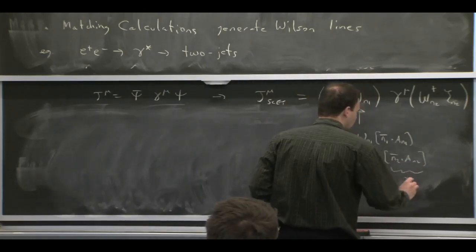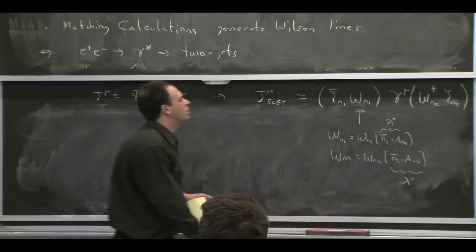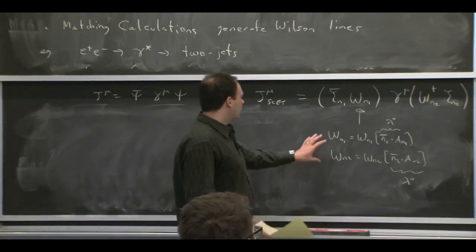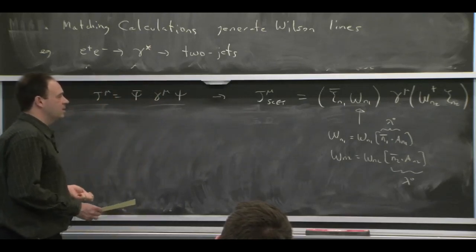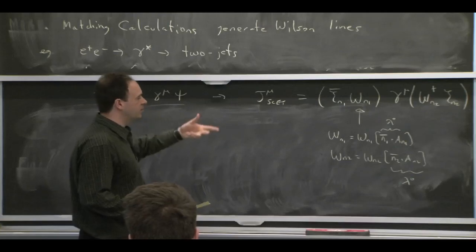So you get Wilson lines that are built out of the n1 bar dot a n1 fields, which are order lambda 0, or the n2 bar dot a n2 fields, which are order lambda 0. So this is lambda 0, and this is lambda 0. So by power counting, we can certainly get objects like that.